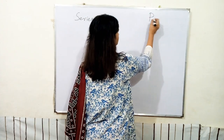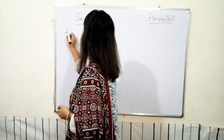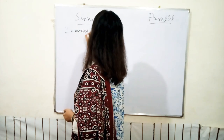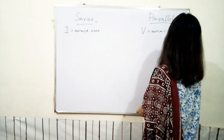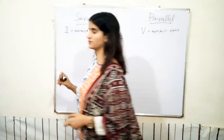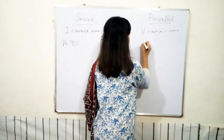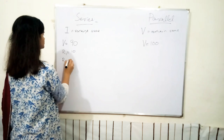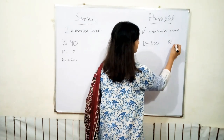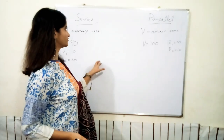Series and parallel resistance are attached in our circuit. Current remains the same in series, while EMF remains the same in parallel. The voltage given is 90 for the series circuit and 100 for the parallel circuit, while resistance R1 is 10 and R2 is 20, the same in both circuits. We will see how much heat is generated by changing the pattern from series to parallel.